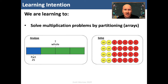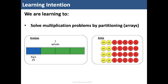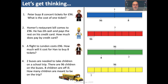We're going to be looking at partitioning arrays. To begin with, let's get thinking. Here we've got four different problems each with the same value, so those values aren't going to give you any clues about how to solve them. We've also got four different bar models that analyse these. I want you to match the problems with the bar models. You'll need to add the descriptions of the whole amounts and the parts. Then if you like you can have a go at solving these.